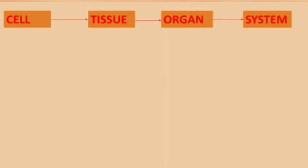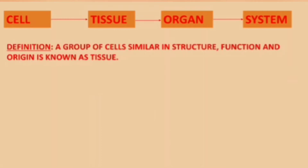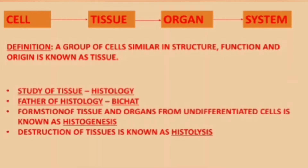Cell forms tissue, tissue forms organ, and organs accordingly form the system. A group of cells similar in structure, function, and origin is known as tissue. The study of tissue is called histology. The father of histology is Bichat. Formation of tissue and organs from undifferentiated cells is known as histogenesis, and destruction of tissue is known as histolysis.